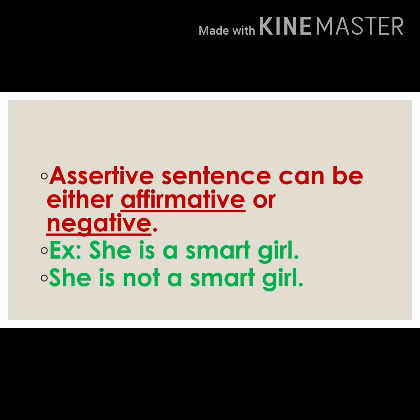See these examples: 'She is very smart.' 'She is a smart girl.' 'She is not a smart girl.' Remember, an assertive sentence can be either affirmative or negative.